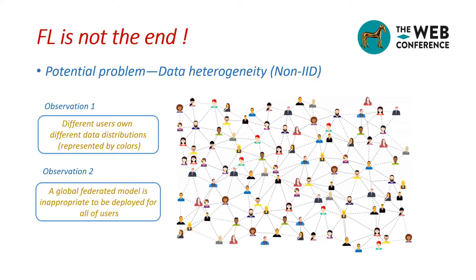However, federated learning is not the end. In other words, it may not be the optimal solution for each client, since the data distribution of clients is inherently non-IID. As shown in the figure, we can observe two things: different users own different data distributions, and a global federated model is not appropriate to be deployed for all users. Under this condition, each client should own a personalized model rather than a global shared model in order to better fit its distinctive data distribution.